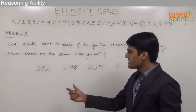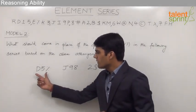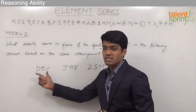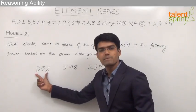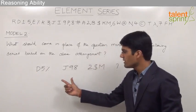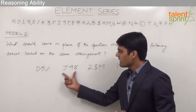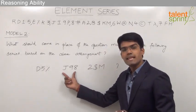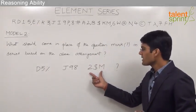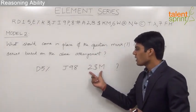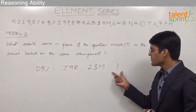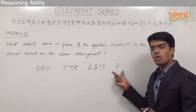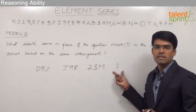A series is given to us which is nothing but a series of triplets — that is D5%, J98, 2$M — and we are supposed to find out what would come in place of this question mark.